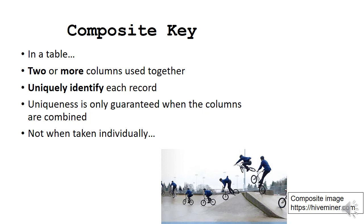A composite key is a different type of primary key. So a composite key is simply a primary key that's made up of two or more columns. It also uniquely identifies a record. And the uniqueness is only guaranteed when the columns are combined and not when taken individually. This composite image is just there to make you think of the word composite. You can see they've combined a whole lot of pictures here to make a composite image.